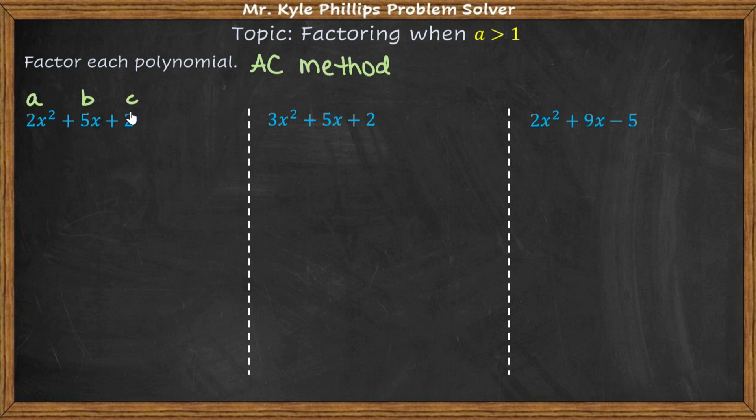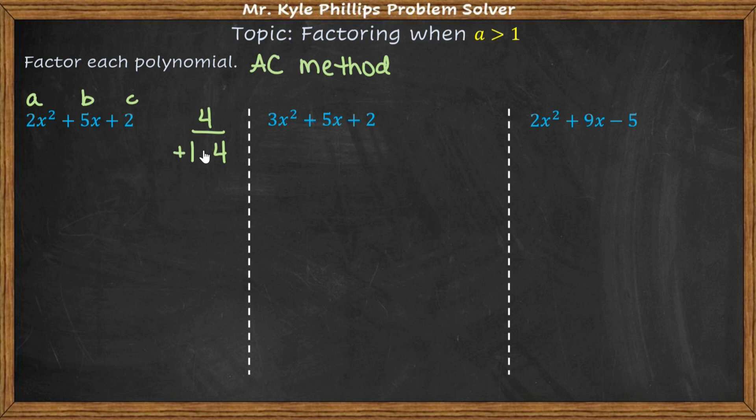With the AC method, you take the 'a' number and multiply it by the 'c' number. So I'm going to take 2 and multiply it by 2, which gives me 4. Now I need multiples of 4 that I can combine to get 5. Starting with 1 and 4 — can I combine these to get 5? Yes, I can add them. So I need numbers that multiply to positive 4 and combine to get positive 5.